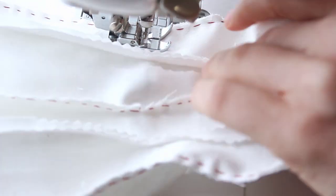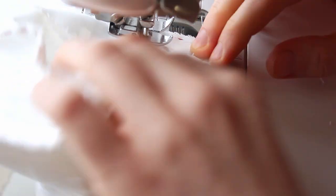Stitch in one continuous seam, pivoting at the corners. You should start with the side part on the bottom. This way you could stretch the top layer and avoid puckering later.